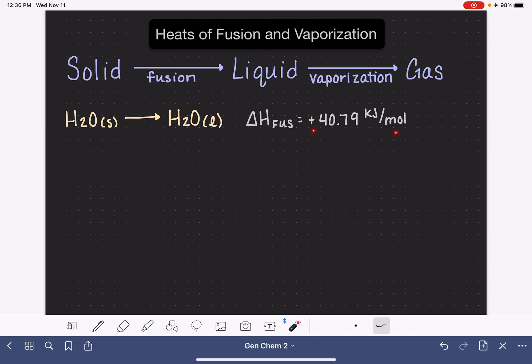Let's think about what this number represents. It's a positive number, which means it's endothermic. That means energy is being put into the system, and that's consistent with our understanding of the melting process. If we want to melt something, we have to heat it up, so we need a positive delta H.